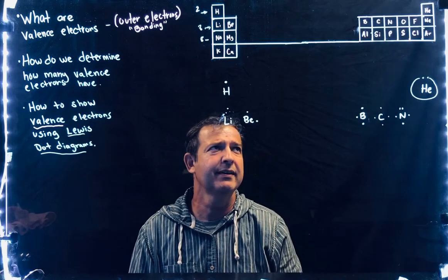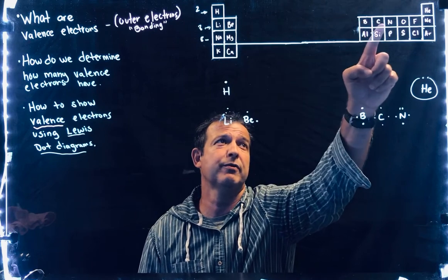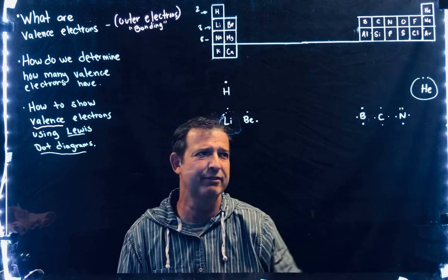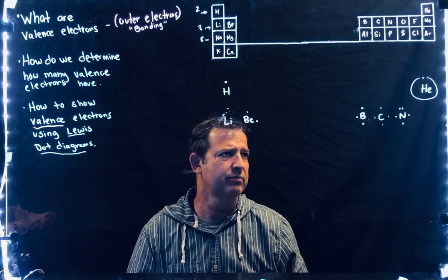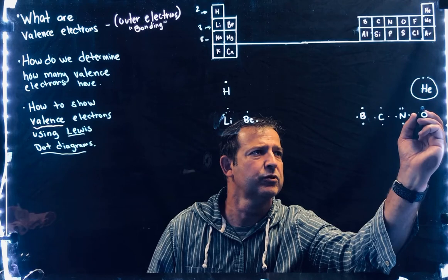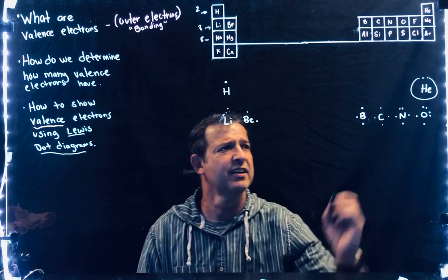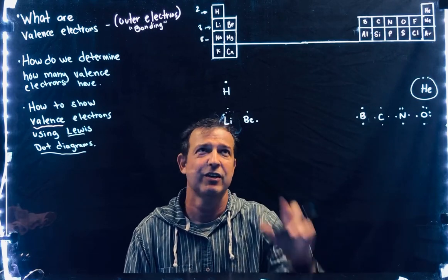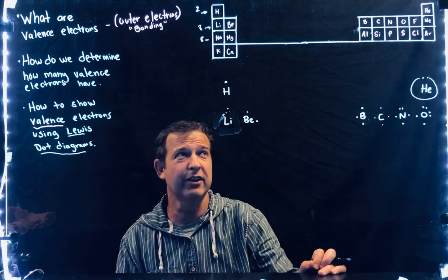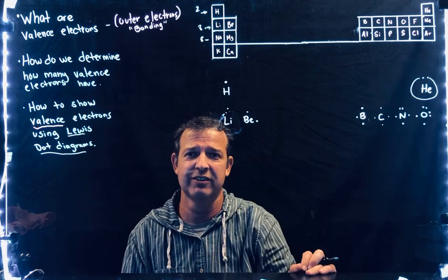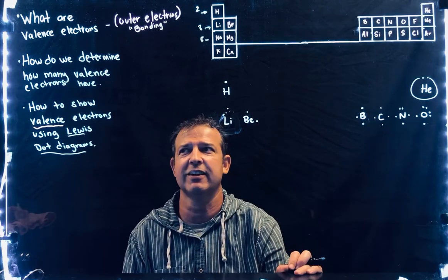Oxygen is the sixth one across in its row, so it has six valence electrons — six dots around it. Starting at the top and going clockwise: one, two, three, four, five, six. So it has six dots. Oxygen had eight total electrons, with two in the first shell — but when you do the Lewis dot, you're only drawing the valence electrons.